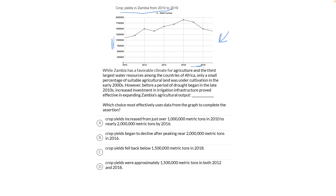To answer this question, I have to understand the argument and the graph. A drought began in the late 2010s, it says. But before that, Zambia's agricultural output expanded. So our peak here is 2016, and then we see less output — the number goes down. That's probably the drought. So we're looking for a choice that talks about the increase in crop yields across the decade prior to 2016.